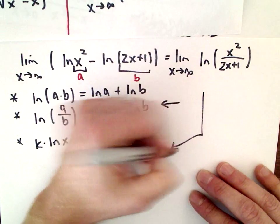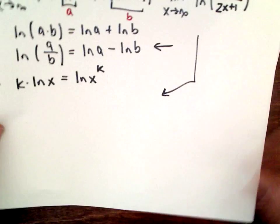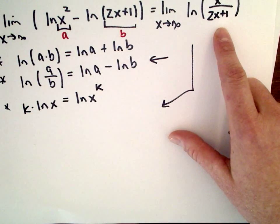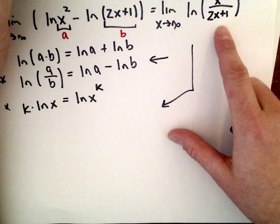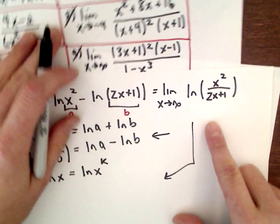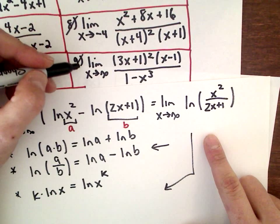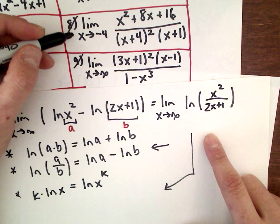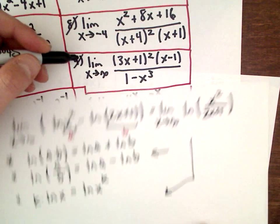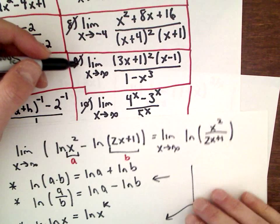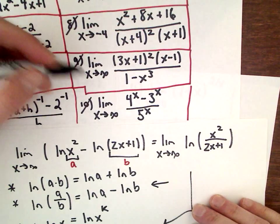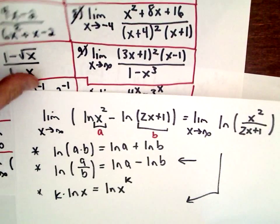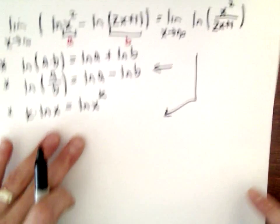This is very much like number 9 — those were the problems where we had limits going to infinity and we divided by the highest powers. There's a rule that says you can pull the limit inside the logarithm.